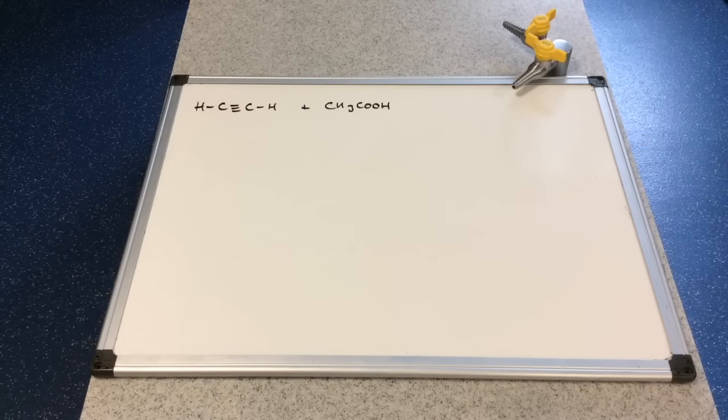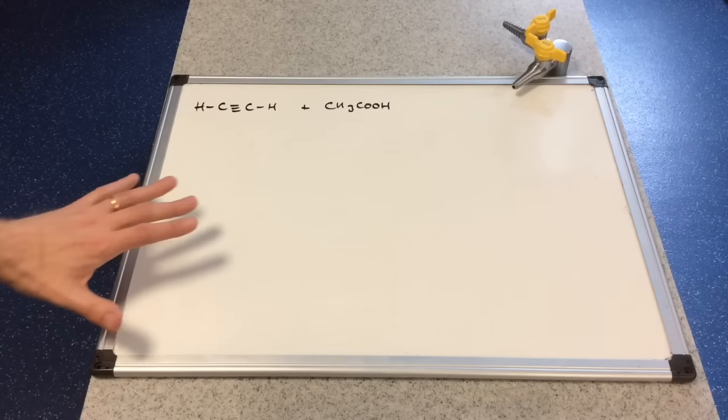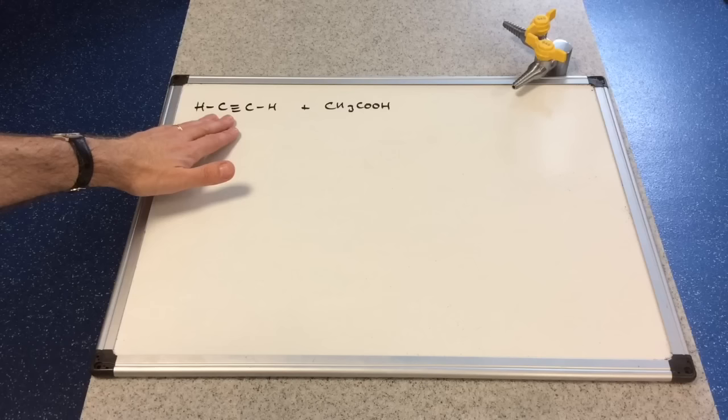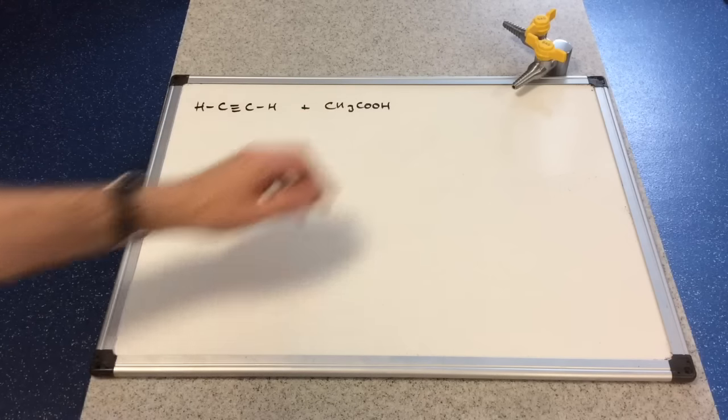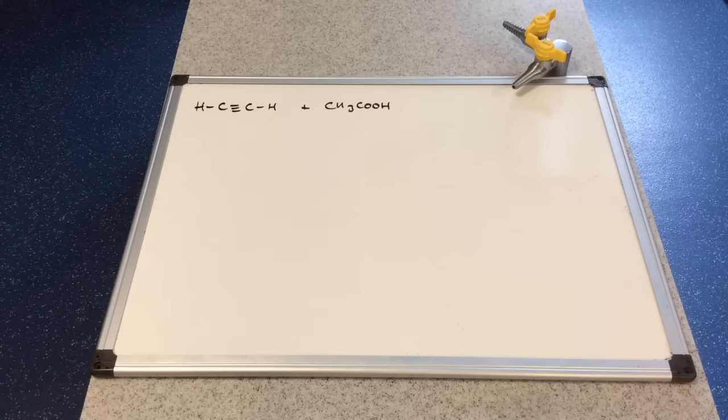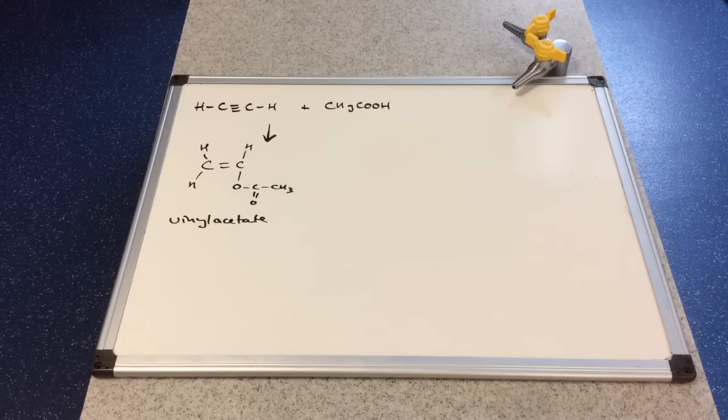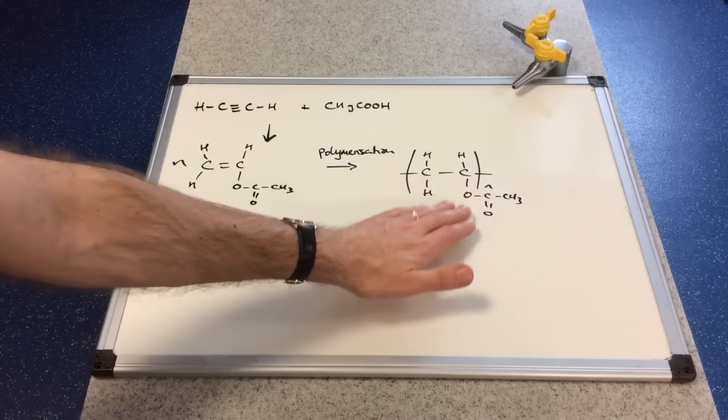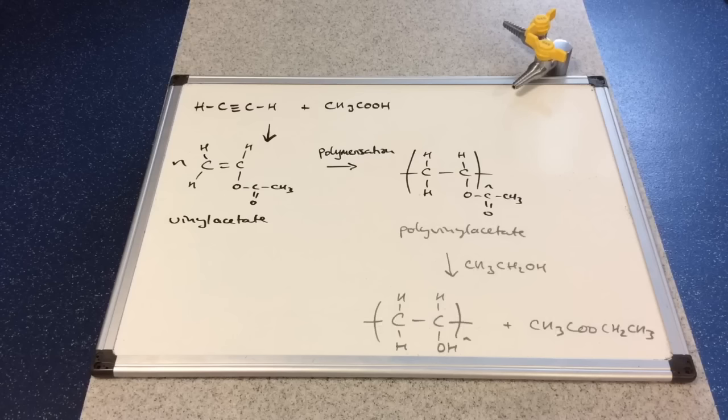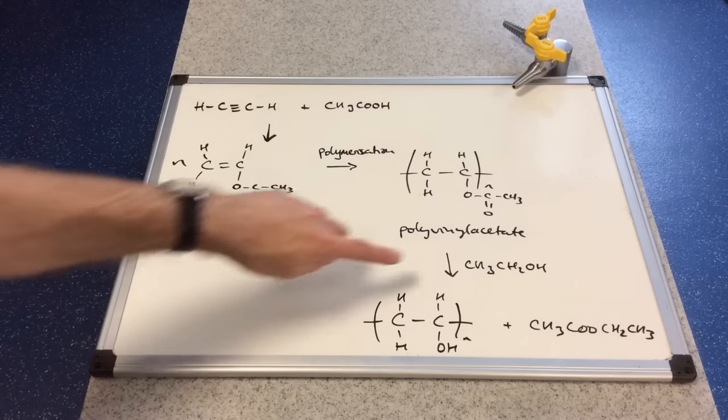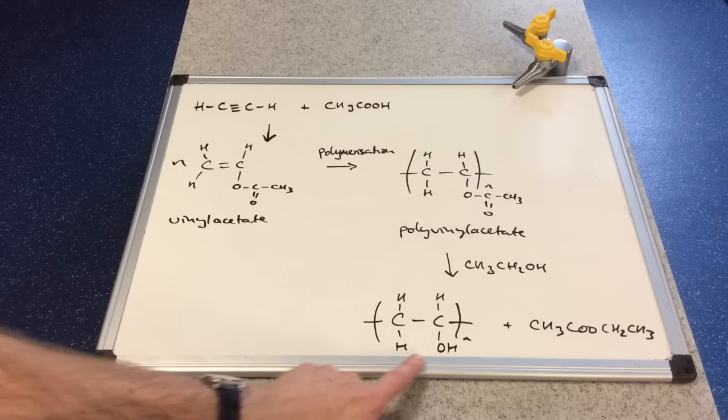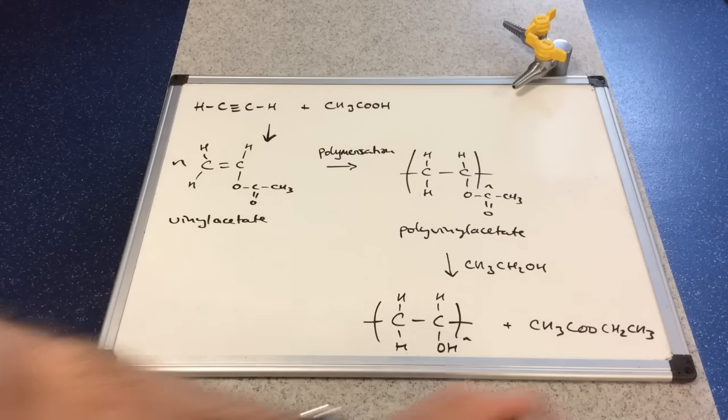So we'll just quickly run through those steps now and end up with a complete flow chart of the whole process. So the first part is to take ethyne or acetylene its old name and ethanoic acid or acetic acid and combine them. And that produces vinyl acetate. The vinyl acetate is then polymerized by addition polymerization to produce polyvinyl acetate. And then the polyvinyl acetate is then reacted with ethanol. The ester bond is broken. And we get polyvinyl alcohol and the ester ethyl ethanoate.